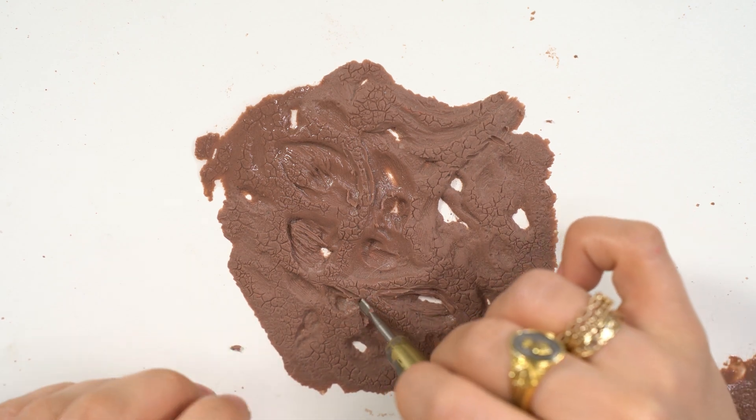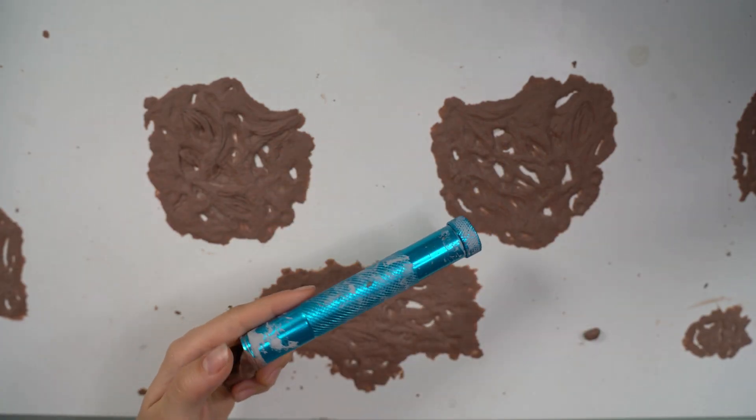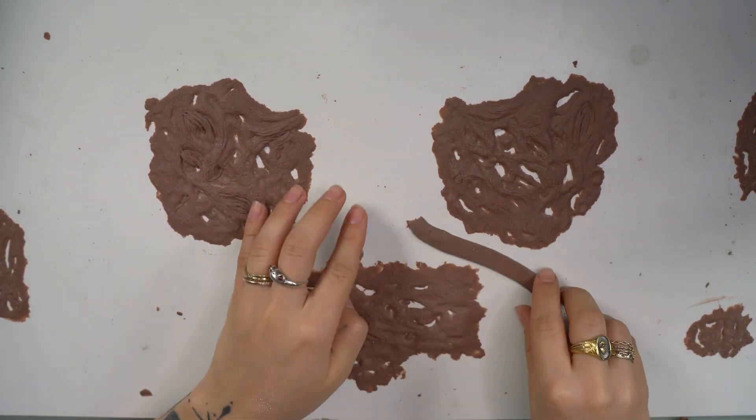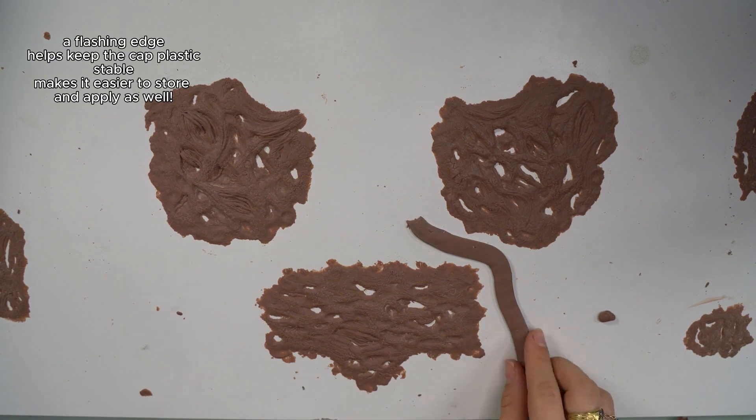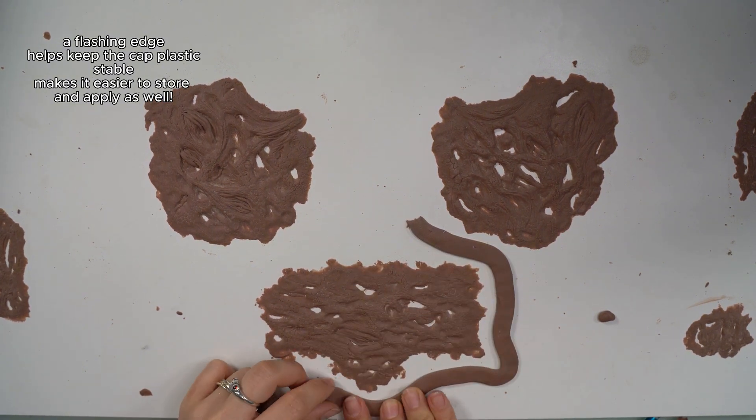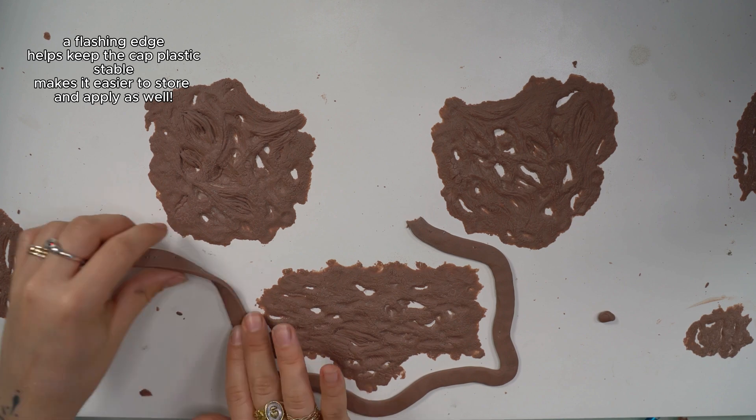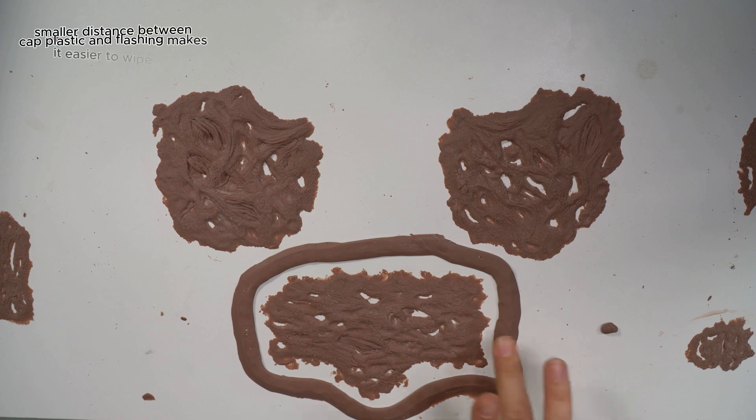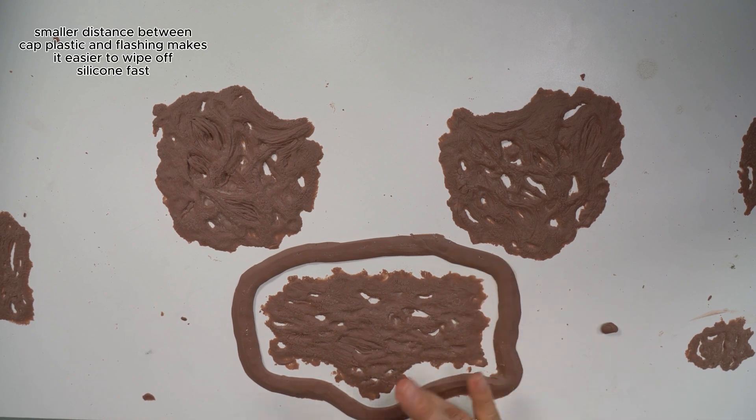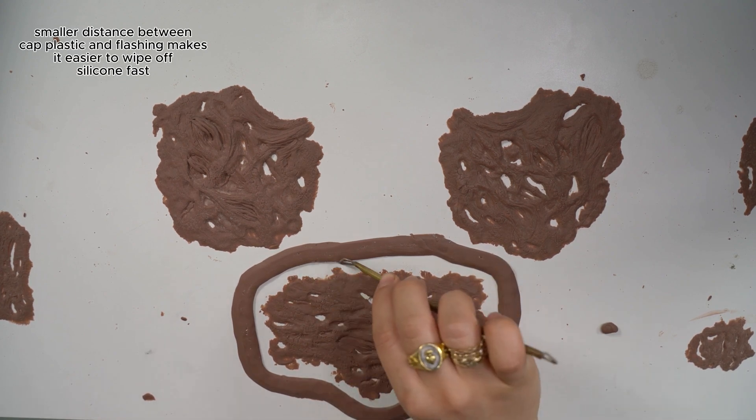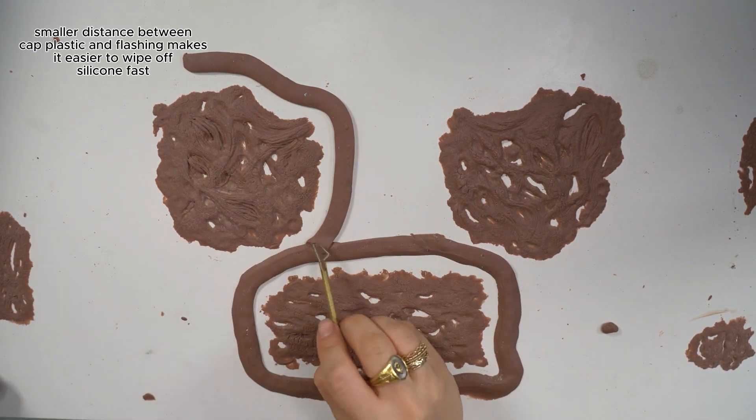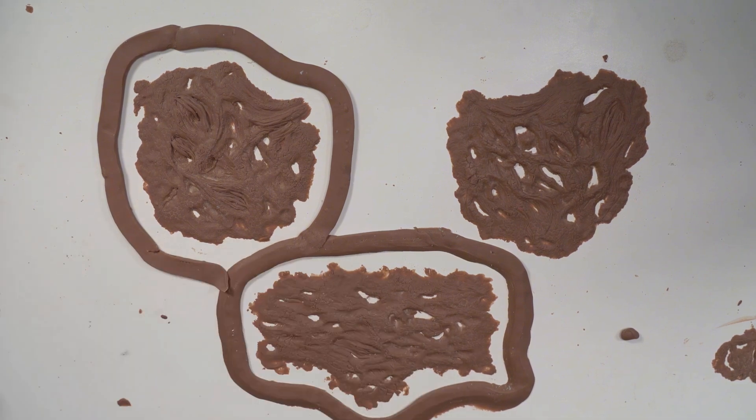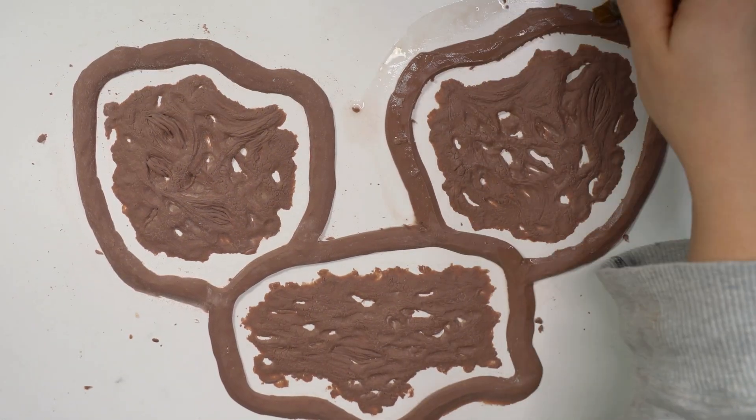Once you're finished with the sculpt, you want to go and make a flashing edge around it. I'm using a clay extruder for this. I'm going to make sure it's about a q-tip's length away from the sculpt, if that makes sense, because you want to be able to dissolve the edges but you don't want too much cap plastic there. You want to make sure you don't have too many harsh edges either because when you're demolding the prosthetic, it can catch and then sometimes the cap plastic will tear off. So I just go and smooth everything out with one of my tools and then a little bit of isopropyl alcohol.